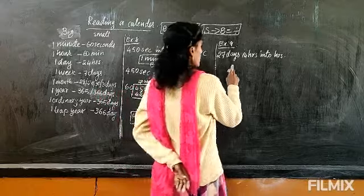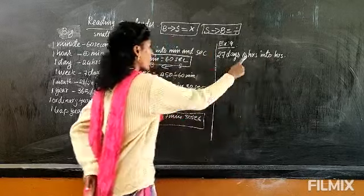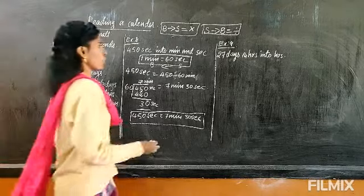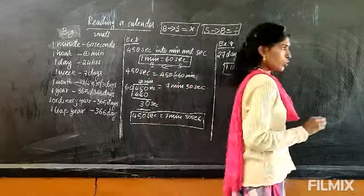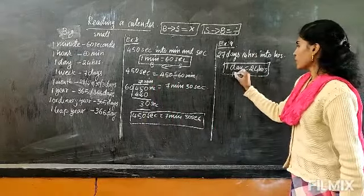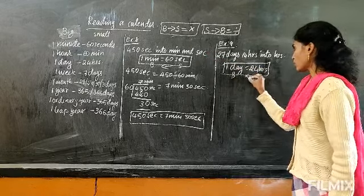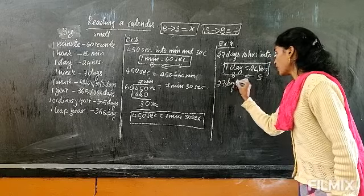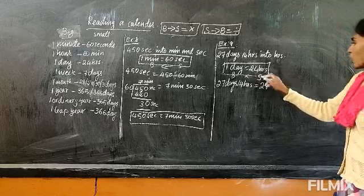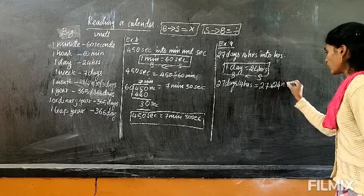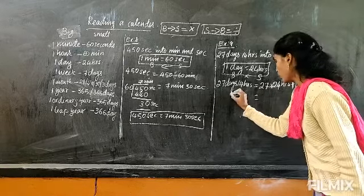Next sum: 27 days 14 hours into hours. We need to convert days into hours. The formula is 1 day equals 24 hours. Day is big and hour is small, so day to hour is big to small — multiply. So 27 days times 24 plus the existing 14 hours.